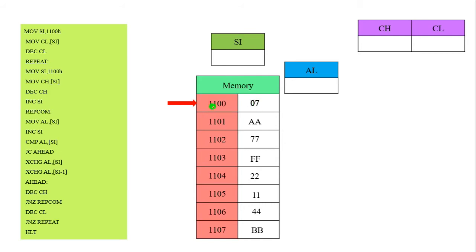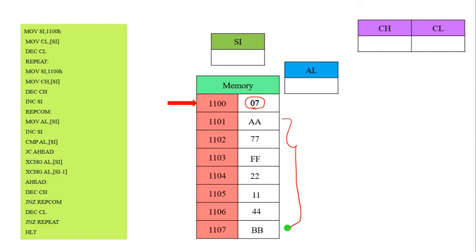These are the memory locations: 1100 contains 07, 1101 contains AA, then 77, FF, 22, 1144 contains BB. The data can be sorted. At memory location 1100 we store the value 07, meaning 7 data will be taken. If you store 08, 8 data will be taken; if 09, then 9 data. That is how we are going to perform. After that, we are going to compare — first we take the value AA and compare it with the next data. Based on which is smallest, the exchange will take place.